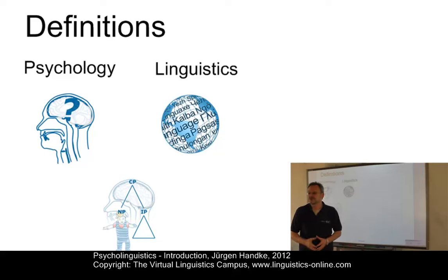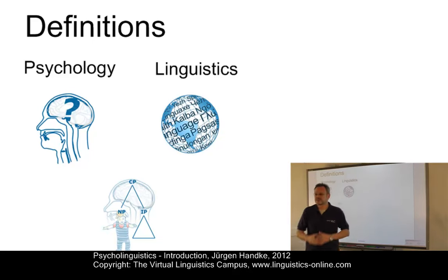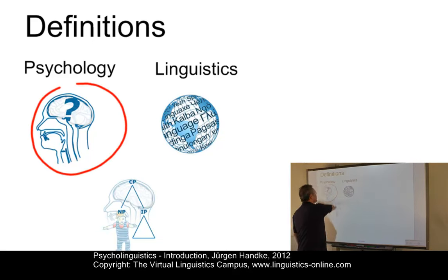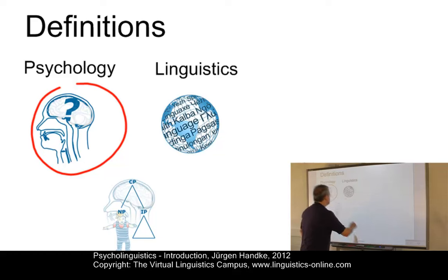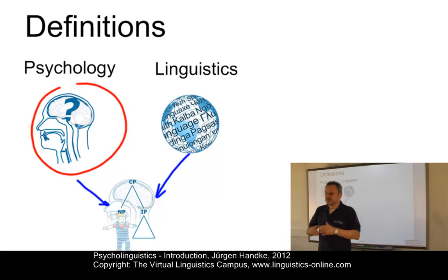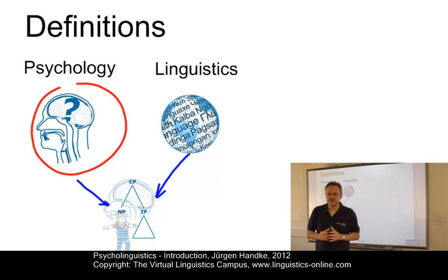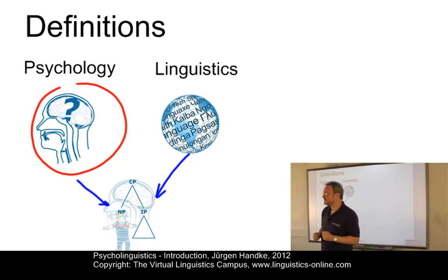Let's look at some definitions first. Linguistics is defined as the scientific study of language. Psychology, the other term signaled by this mind here, studies scientifically the human mind. Psycholinguistics is a combination of both, with the goals to study the psychological and neurobiological factors that enable humans to acquire, to use, to comprehend, and to produce language.